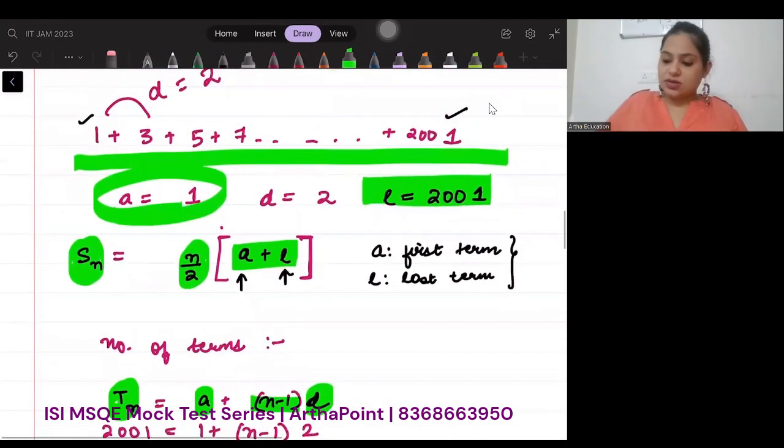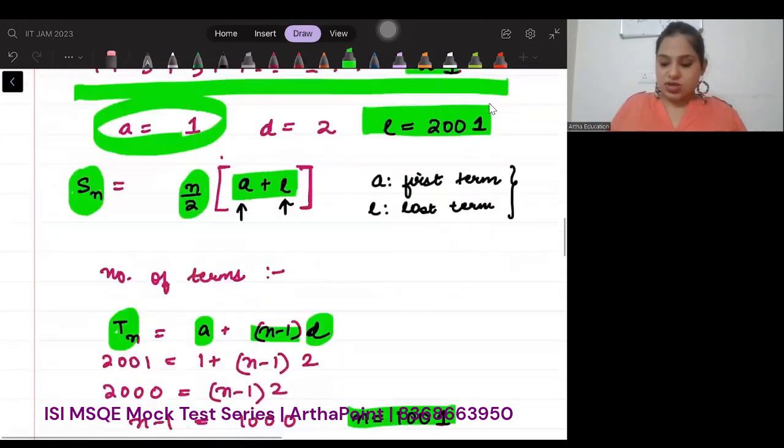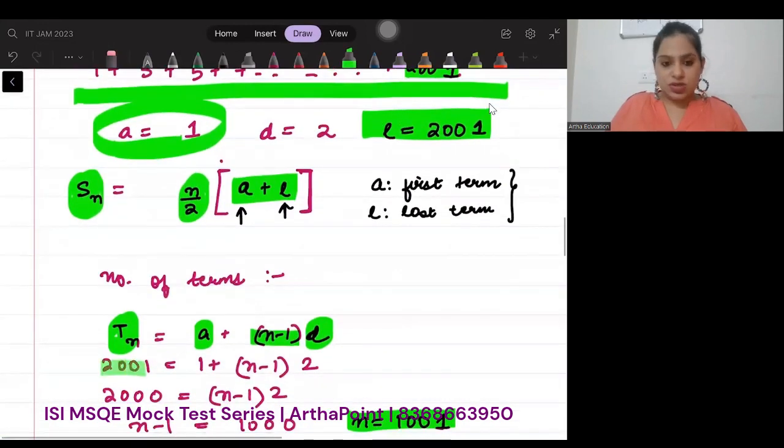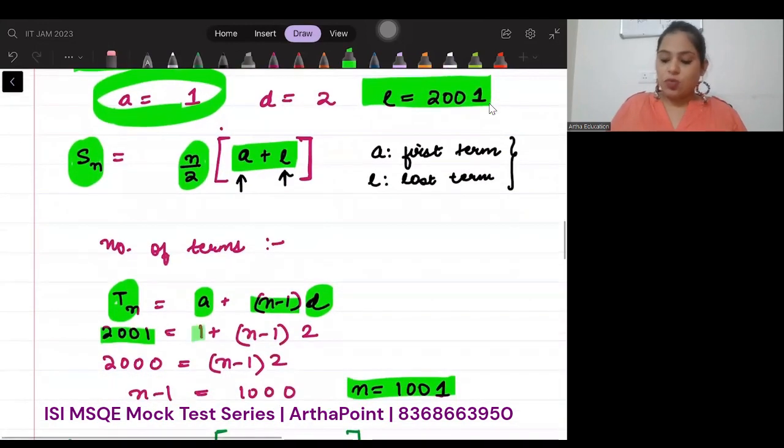So here the nth term is 2001, so I will put 2001. The first term is 1, so I will put 1 plus (n minus 1). I don't know what n is, so I will keep n as it is, and the difference is 2.